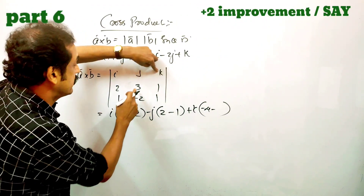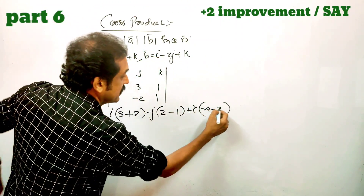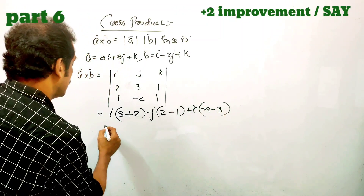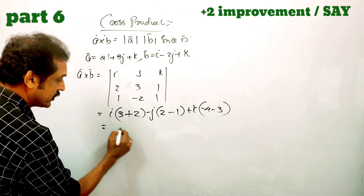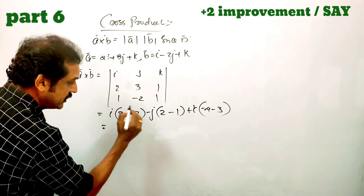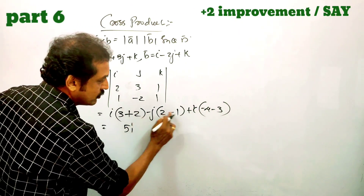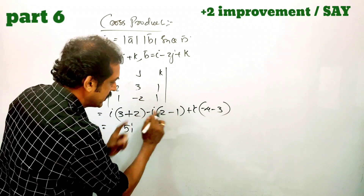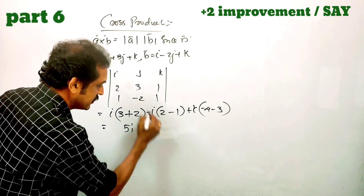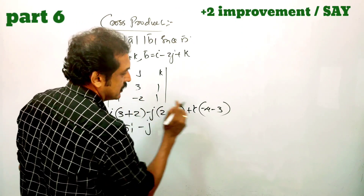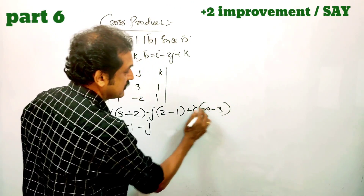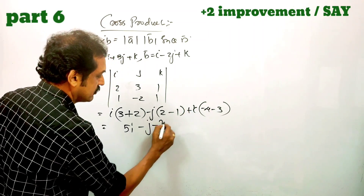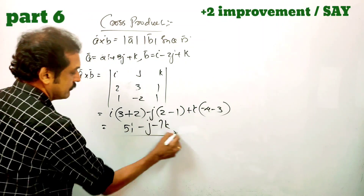The product gives: 3 plus 2 equals 5, so this is 5i. Then 2 minus 1 equals 1, giving minus j. Next, minus 4 minus 3 equals minus 7, giving minus 7k. So A cross B equals 5i minus j minus 7k.